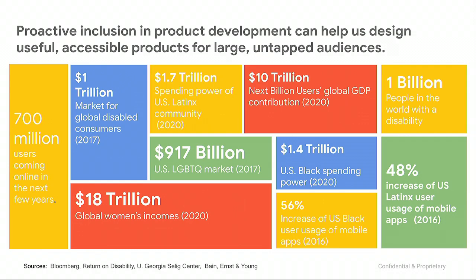These demographics do have a lot of purchasing power, or they might just be really big pieces of our population. There are 1 billion people in the world currently with a permanent disability — that's a really big swath of the population. And there's $1.4 trillion in U.S. Black spending power by 2020. These are stats our team looks at all the time to help product teams across Google and YouTube think about as they're building for everyone.